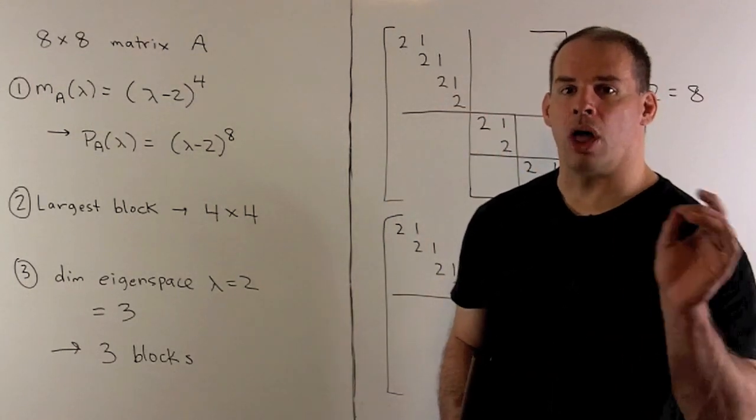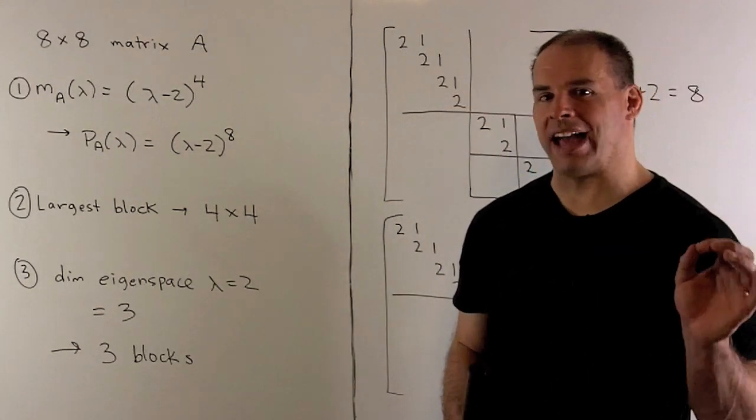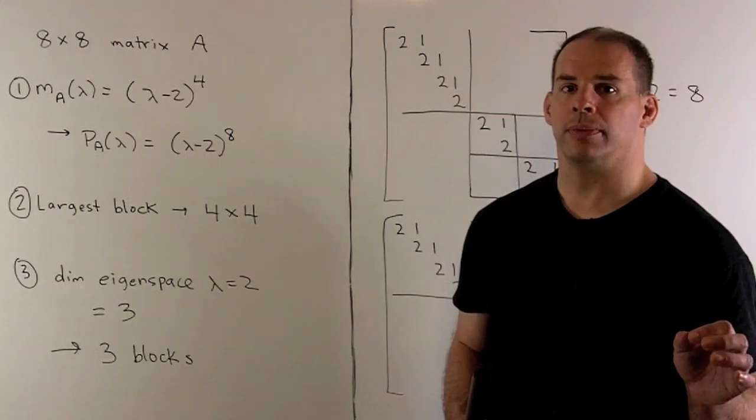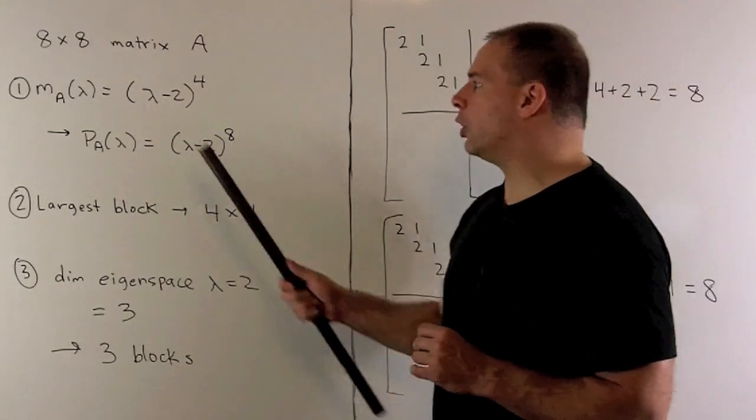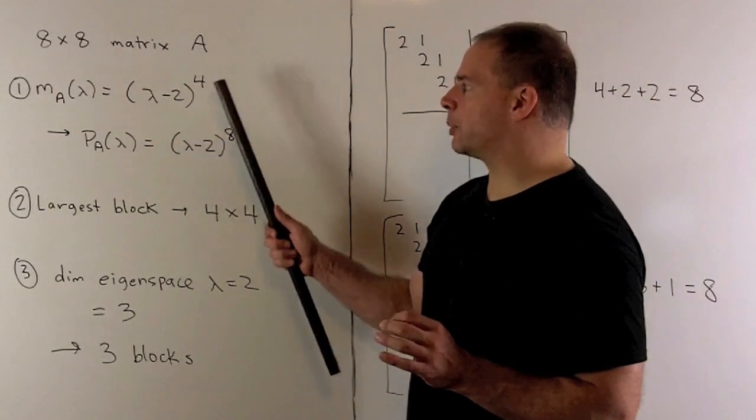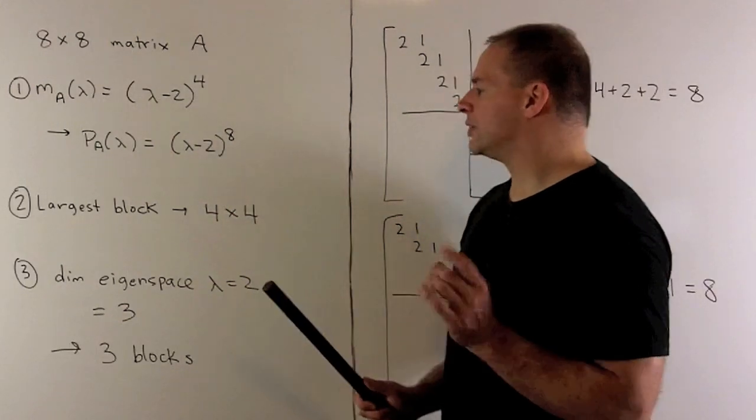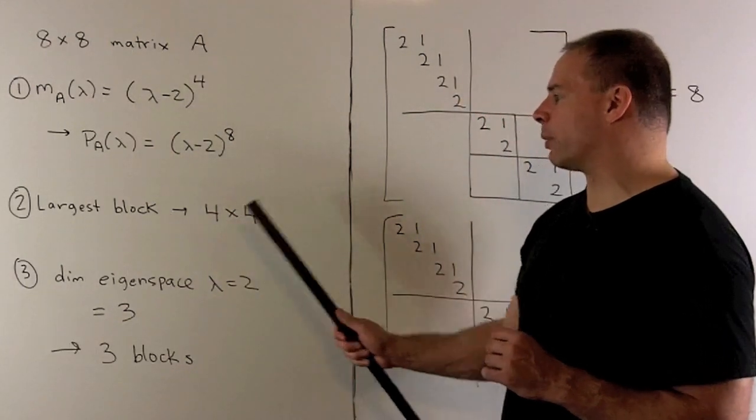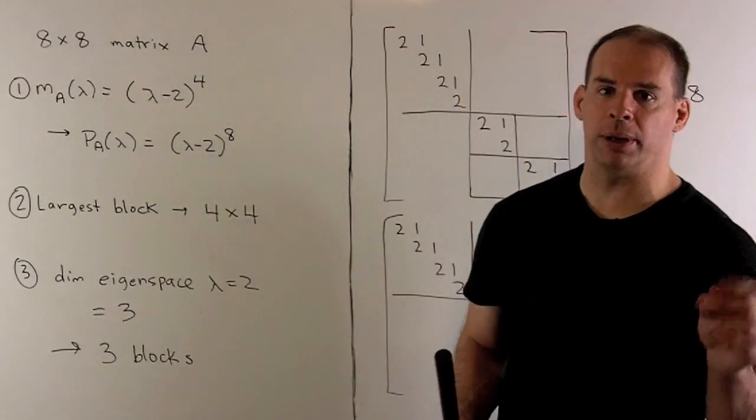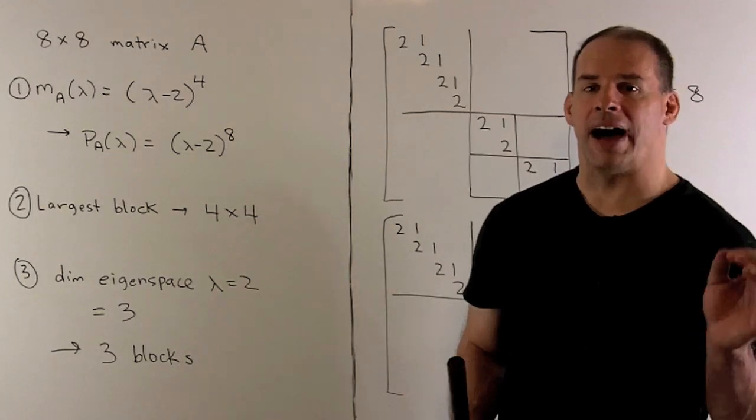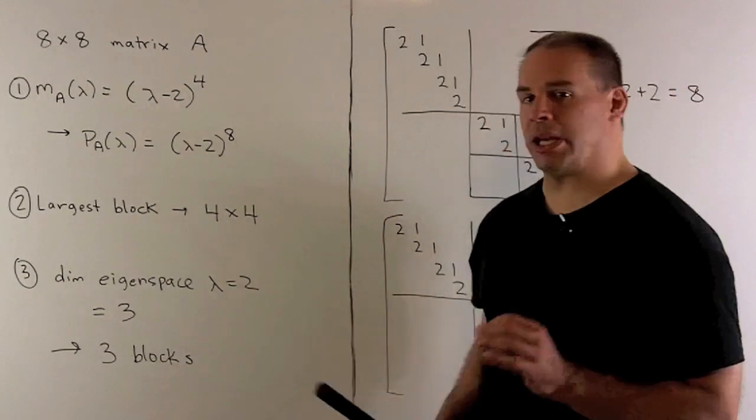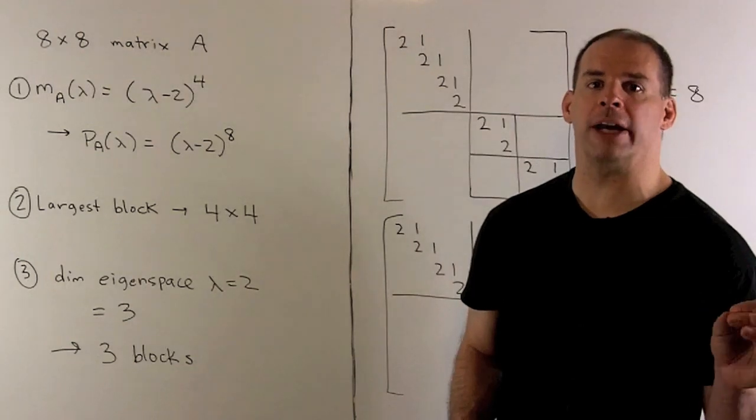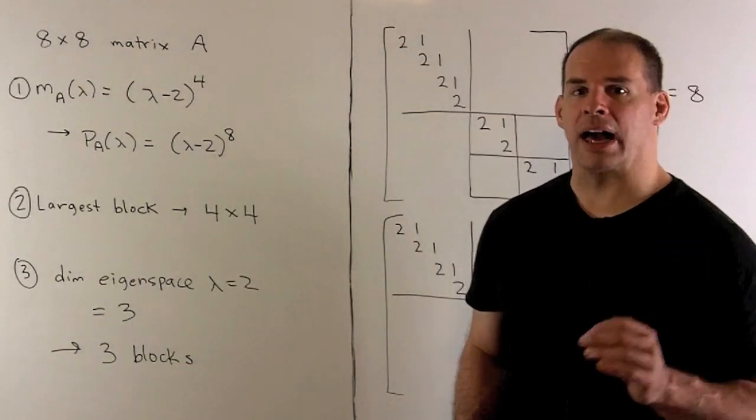That means all of our blocks correspond to the eigenvalue two. By inspecting the minimal polynomial, the exponent on lambda minus two is a four, so that means our largest block is going to be a four-by-four block, and that has to appear. Finally, we're given that the dimension of the eigenspace for eigenvalue two is equal to three. So we're going to have three blocks.